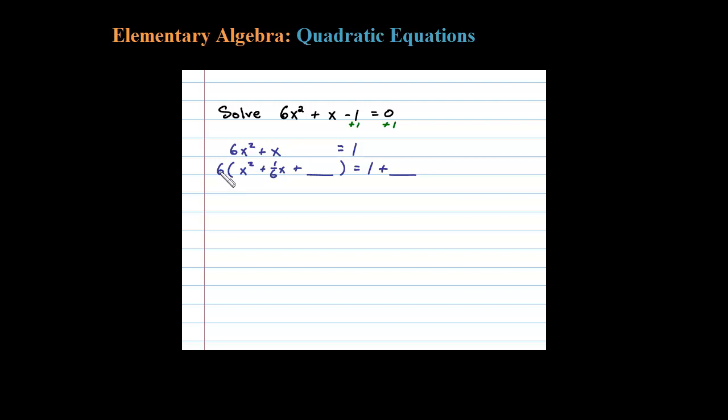Now the leading coefficient is 1, so we have to look at the coefficient of the x here, 1/6. When I divide that by 2 and square it I'll be left with 1/12 squared which is 1 over 144.